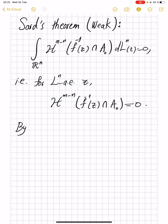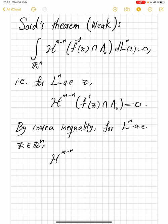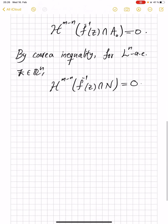Now by Co-Area inequality, or Eilenberg's inequality if you wish to call it, same holds for the null set. So for L^n almost every z in the target, H^{m-n} of f inverse of z intersected with N equals 0. So we only need to deal with the set A1.